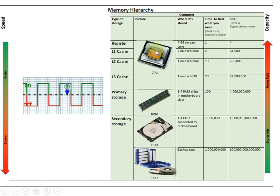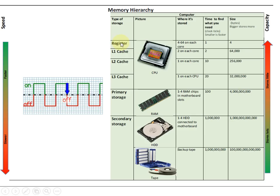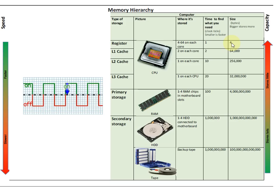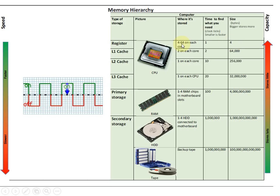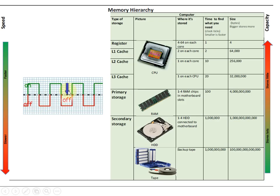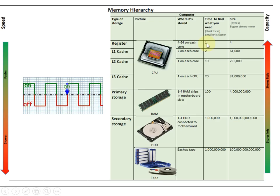Inside the CPU are a number of registers. They're extremely fast but don't store that much — typically 32 bits or 64 bits, depending on the processor architecture. There are between 4 and 64 registers depending on the CPU, but they're extremely fast: every time the clock pulse changes, you can read data or you can write data.